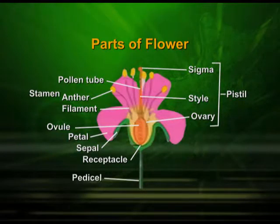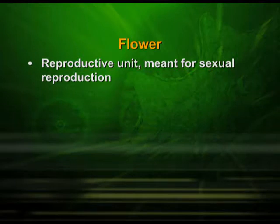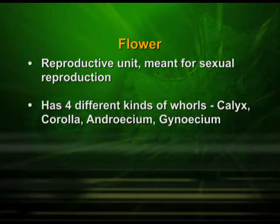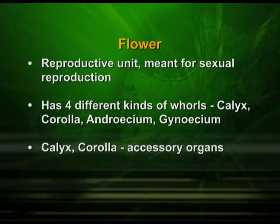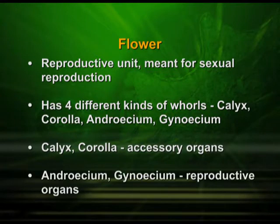The flower is the reproductive unit meant for sexual reproduction, and has four different kinds of whorls: calyx, corolla, androecium, and gynoecium. The calyx and corolla are the accessory organs, and the androecium and gynoecium are the reproductive organs.